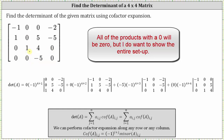We move on to the next element in row four, which is negative five in row four, column three. So we have plus negative five times negative one raised to the power of four plus three — the exponent is four plus three because the negative five is in row four, column three. Then we multiply by the determinant of the matrix formed by eliminating row four and column three, which gives us the three by three determinant where the first row is negative one, zero, negative two; the second row is one, zero, negative five; and the third row is zero, one, zero.